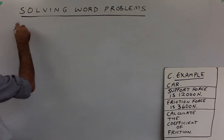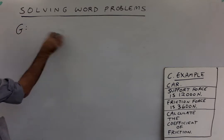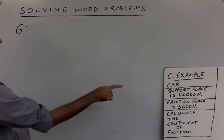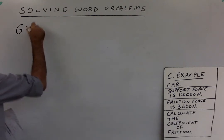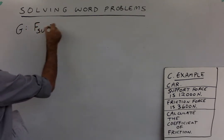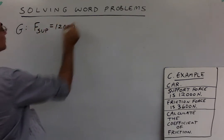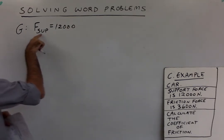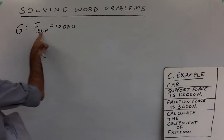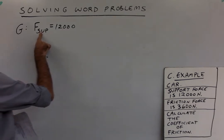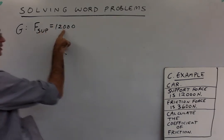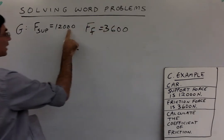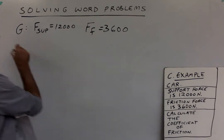So G stands for givens. You don't have to write the whole word when you're showing your work, just the G. Okay? Support force is 12,000. This is the way I write it. The symbol and equal sign in 12,000. It's very important you put the symbol down because that will help you find the right equation, the equation that has friction or support force in it. It's very important to put the number down because you can use it later. The other given is friction force equals 3,600. So 12,000, 3,600 with the correct symbol.